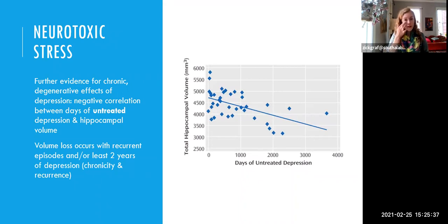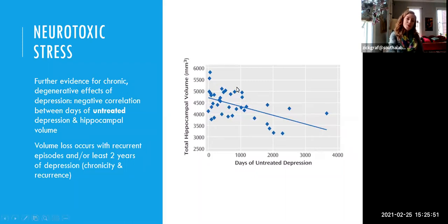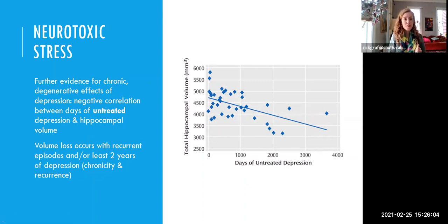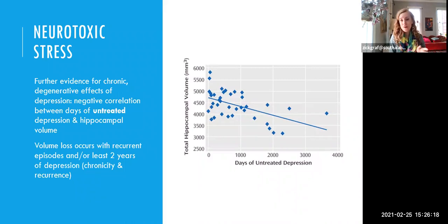This is an MRI study looking at the linear relationship between how long someone has had depression without treatment and the size of their hippocampus. There's a negative relationship: people who've had the longest duration of untreated depression have the smallest hippocampal volume. We start to see hippocampal volume loss with either more than two recurring episodes or at least two years of chronic depression. Thinking about the heterogeneity of depression, only chronic and recurrent depression seem to have this neurotoxic effect, suggesting these are more serious, damaging forms of depression.